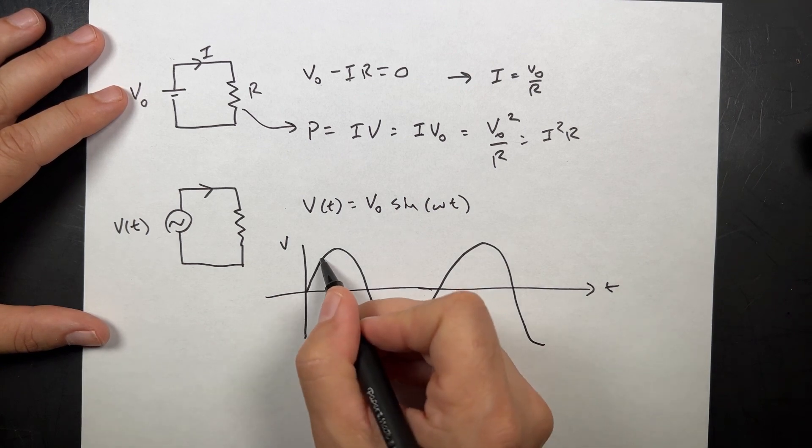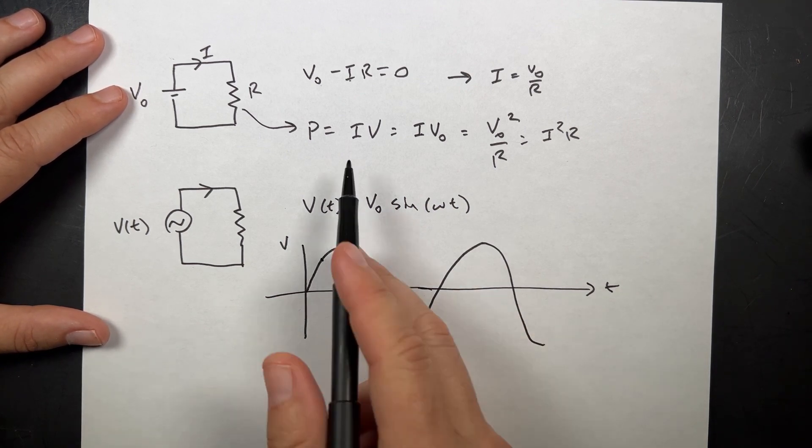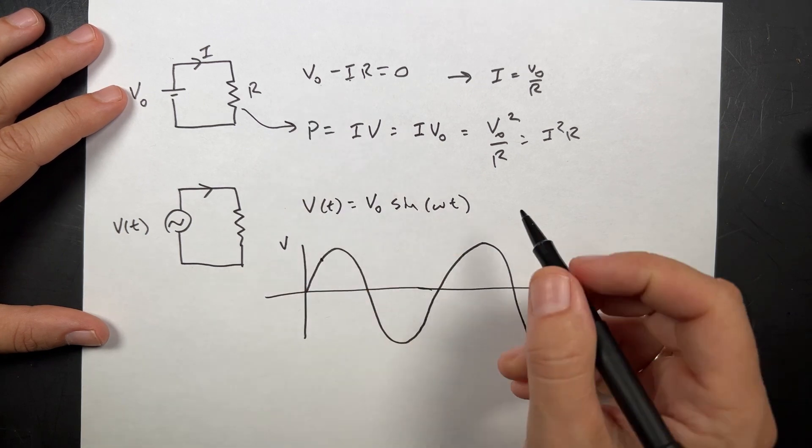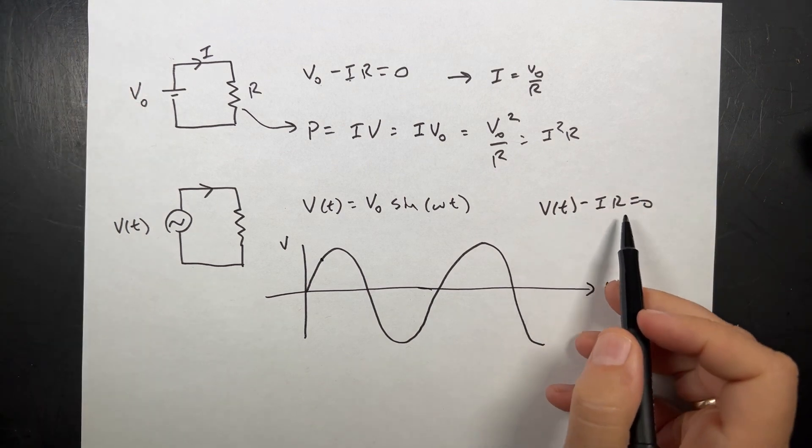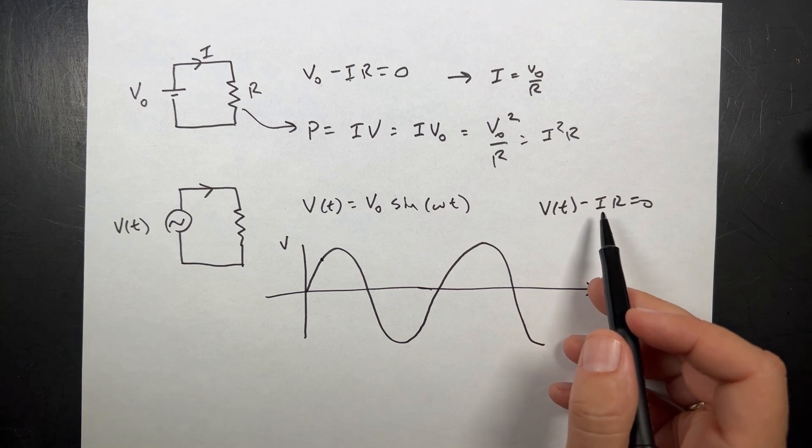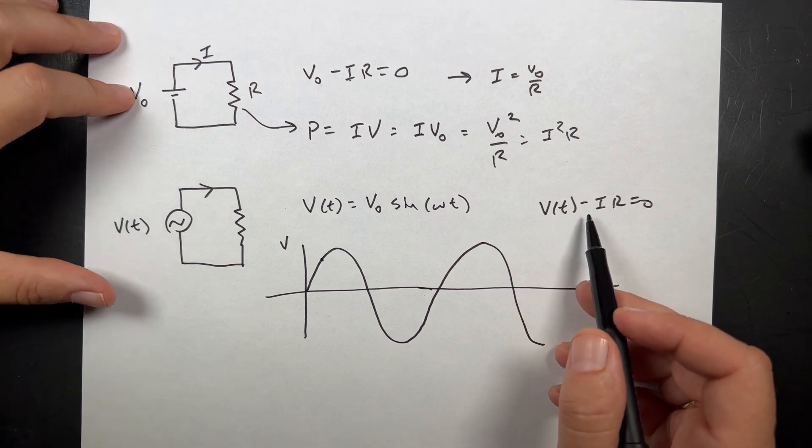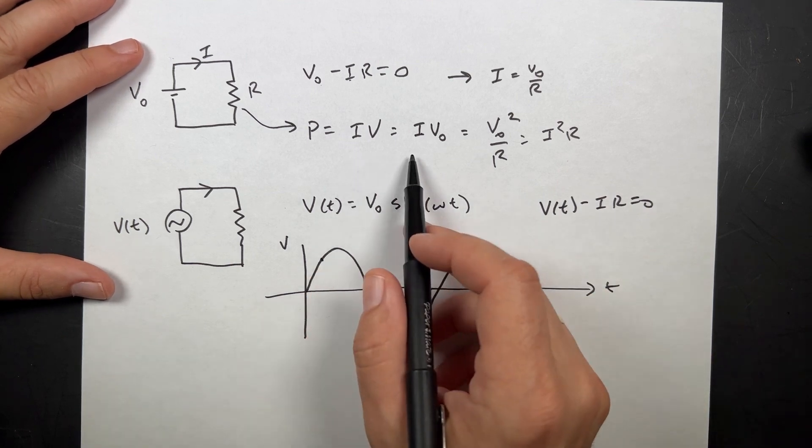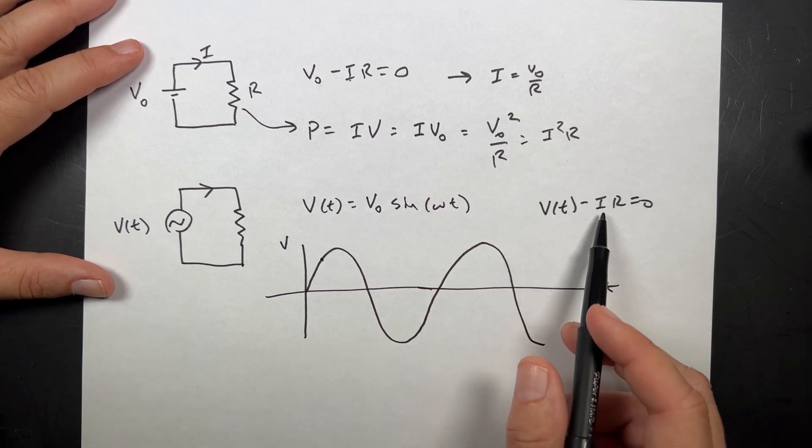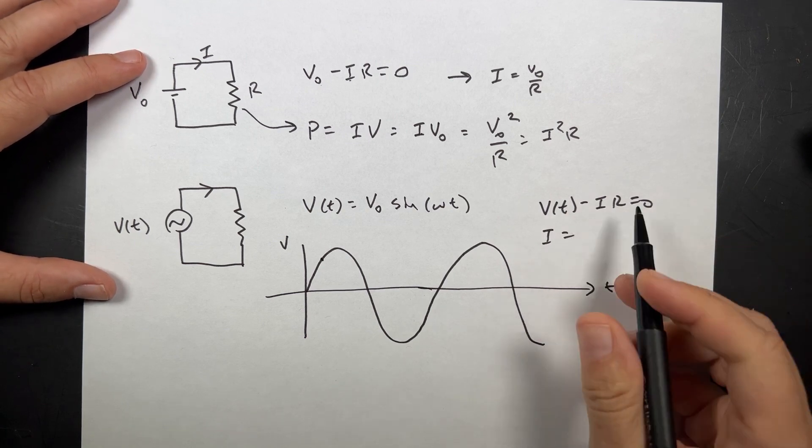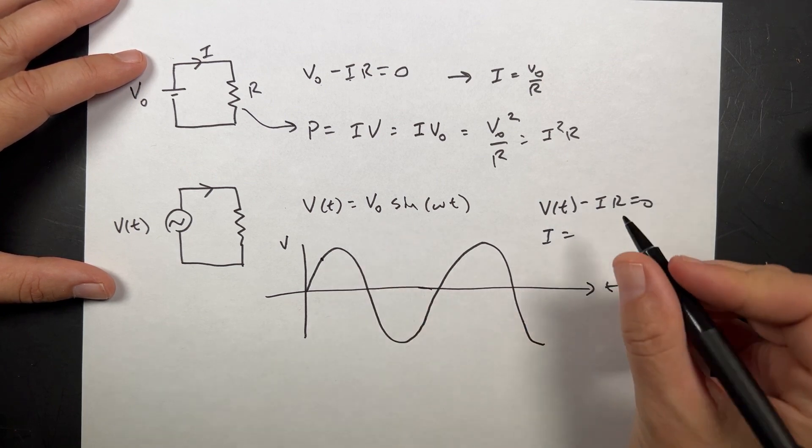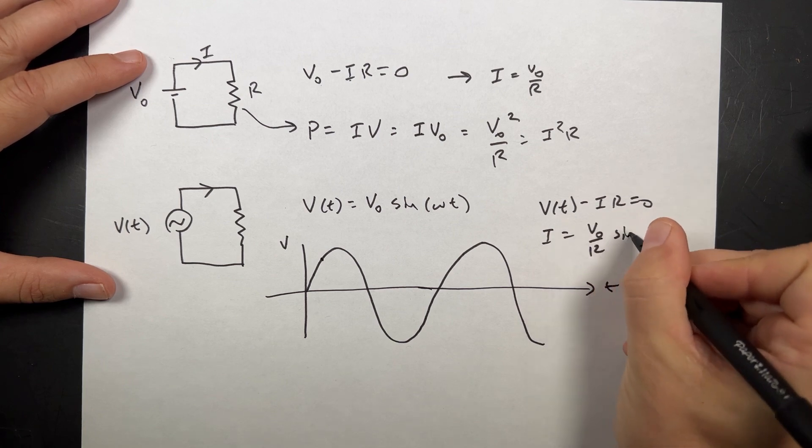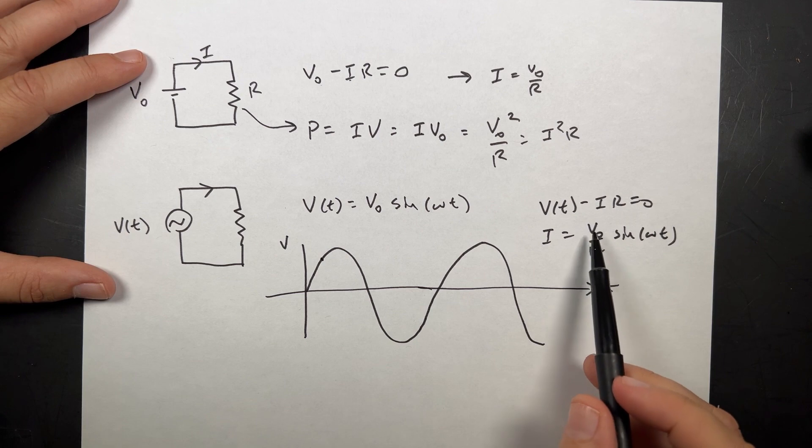But at any given instant, I have some voltage, and this still works. I can replace V0 with V. I can say V as a function of T minus IR equals zero. But if the resistance is constant and the voltage is changing, the current has to change too. Now, what if I want to calculate the power? Well, I can use any of these methods. But the important thing here is that I is going to be equal to, since this has to be true, V as a function of time divided by R. Well, I have that over here, so it's just V0 over R sine omega T.